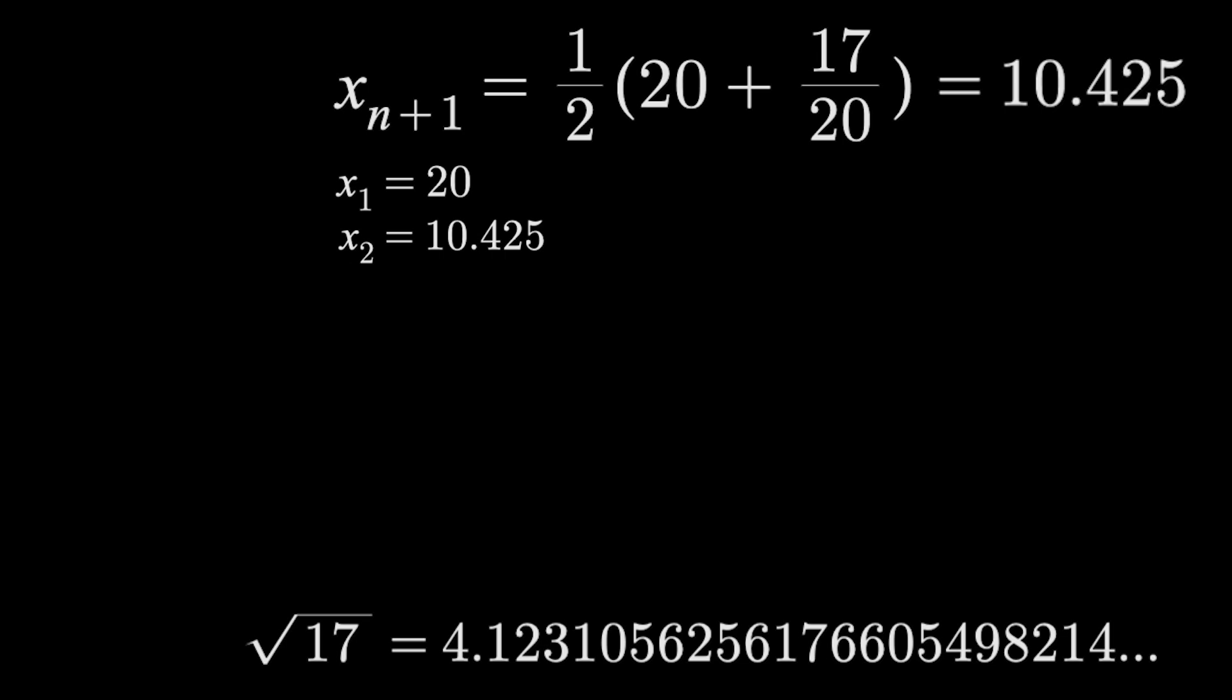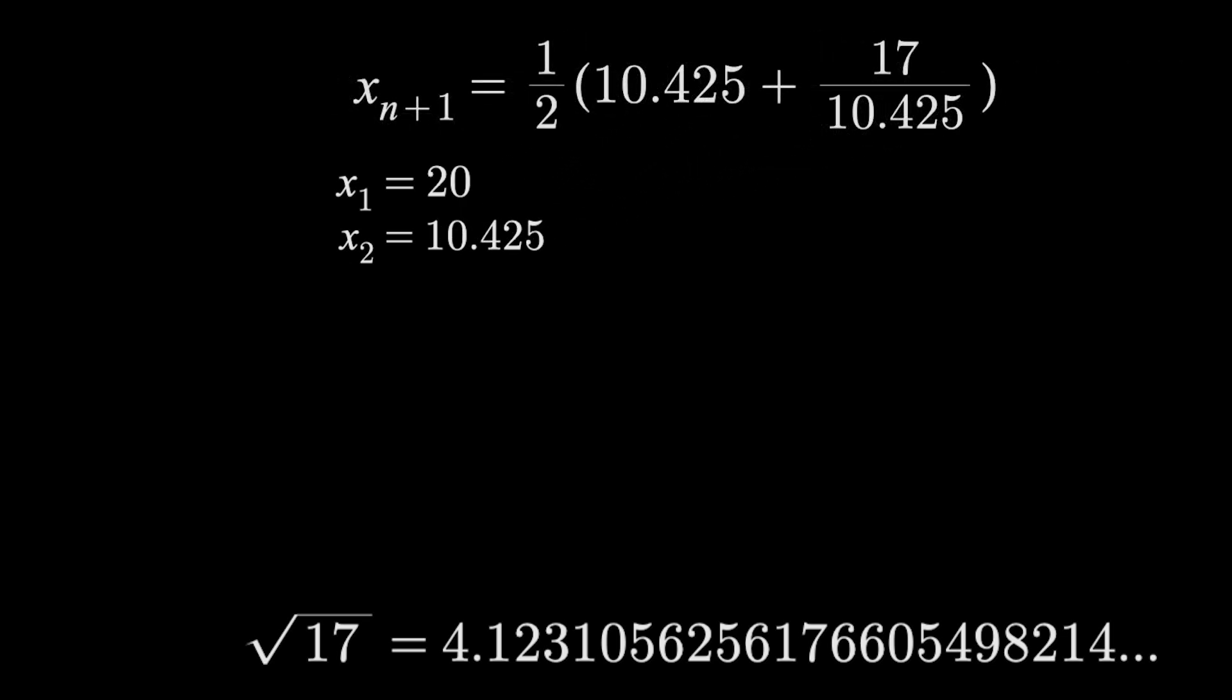From here we just iterate, repeat the process we just did. We'll plug in 10.425, or x_2, where those x_n's were, and we get x_3 equals roughly 6.0278. So getting closer.